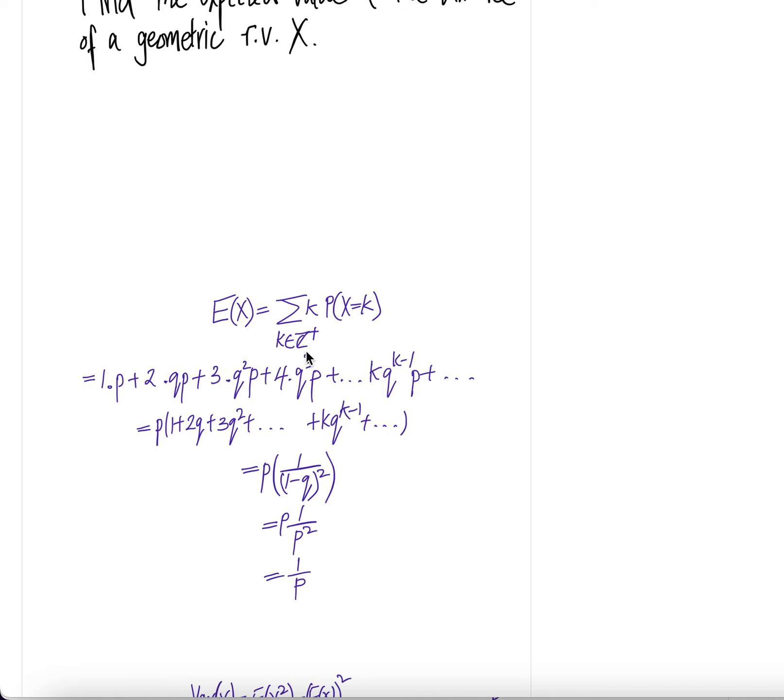It'll be q, q, p. For the fourth one, it'll be fail, fail, fail, success. For this trial, you have k minus 1 failures, therefore the probability of getting the failure is q to the power k minus 1 times 1 success here, the last one is a success is p.